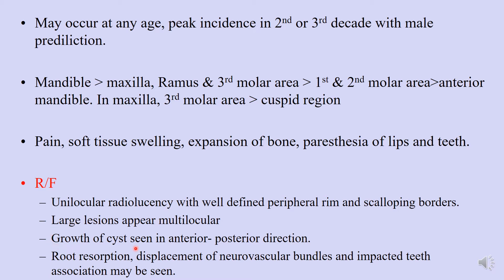A peculiar feature that differentiates OKC from other cysts is its growth pattern. These cysts grow in an anterior-posterior direction, unlike other cysts such as radicular or developmental cysts which generally grow buccolingually. This is why OKC can damage large amounts of bone before being detected — it expands anteroposteriorly without obvious bony expansion. This lesion also leads to root resorption, displacement of neurovascular bundles, and is commonly associated with impacted teeth. Common differential diagnoses for pericoronal radiolucencies are dentigerous cyst and OKC.